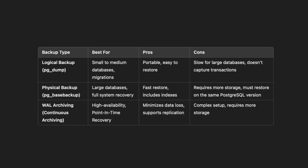We're going to use the pg_dump tool to generate an SQL file so that we can then use it to restore our database. This is ideal for small to medium-sized databases. Choosing the right backup strategy is critical. The disadvantage of pg_dump is that it can be slow for large databases, and it only takes a snapshot at the time of the backup — it doesn't capture ongoing transactions.